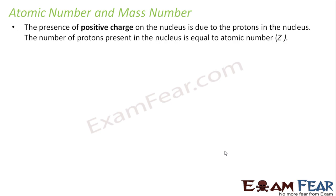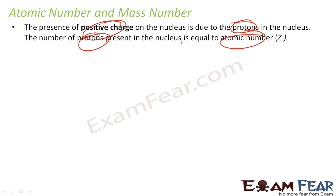The presence of positive charge in the nucleus is due to the proton. And the number of protons is nothing but the atomic number. Please note: atomic number is not equal to number of electrons — don't get confused — but is equal to number of protons.